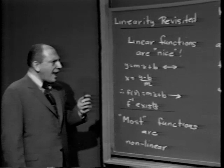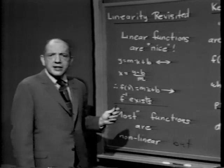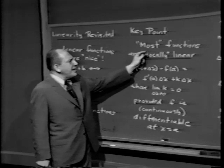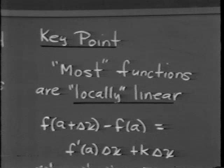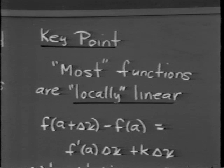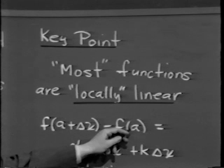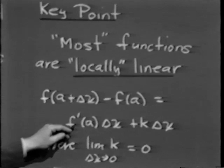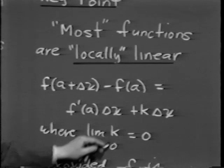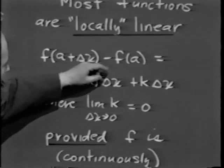Now, an interesting thing occurred. In terms of calculus, we discovered — and here's a key word — most functions are locally linear. Back in the first part of our course, when we talked about delta y sub tan, the change in y to the tangent line, we saw that f(a + delta x) minus f(a) equals f prime of a times delta x plus k times delta x, where the limit of k as delta x goes to 0 is 0 itself. This is provided that f is differentiable at x equals a. Looking at just the first term, this expresses delta f as a linear function of delta x. The term k times delta x is what makes this nonlinear, but it's going to 0 as a second-order infinitesimal.